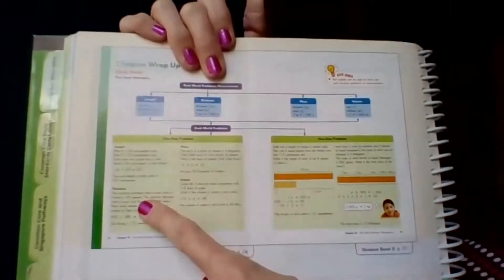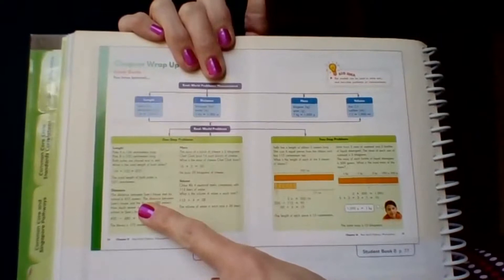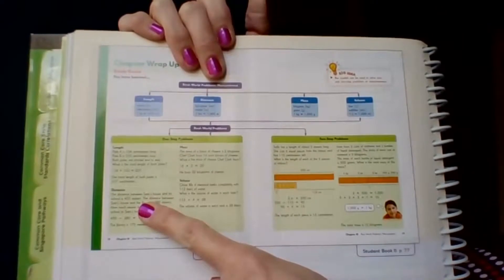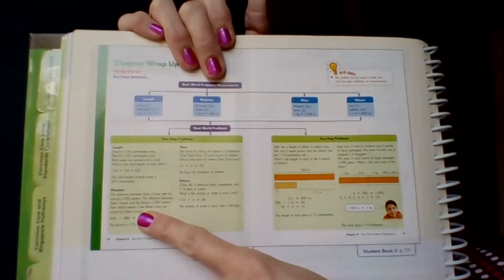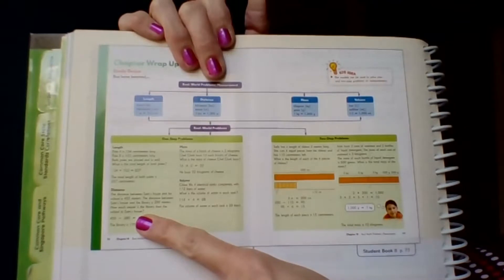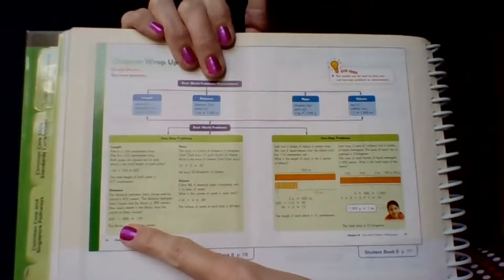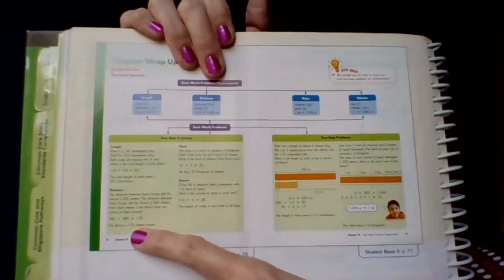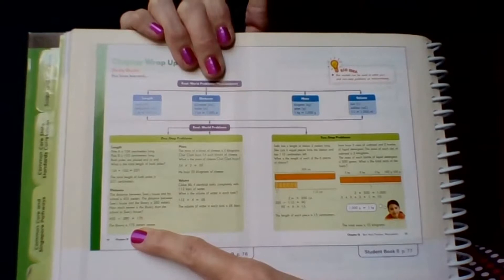Here's an example of a distance that has one step. The distance between Sam's house and school is 455 meters. The distance between Sam's house and the library is 280 meters. How much nearer is the library than the school to Sam's house? 455 minus 280 equals 175. The library is 175 meters nearer.